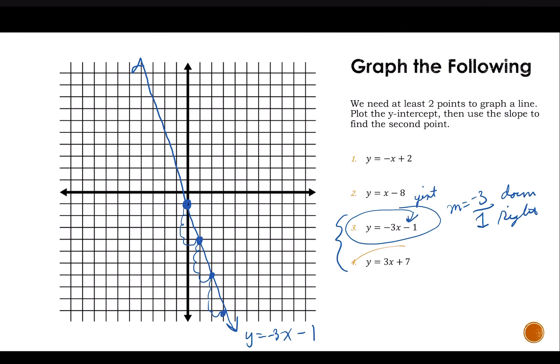Our next example is y equals 3x plus 7. 7 is my y-intercept. That's going to be the first point I plot. 1, 2, 3, 4, 5, 6, 7. It's that one right there. My slope is 3, which is positive, which means I'm going to go up 3 and then right 1. We always go to the right.